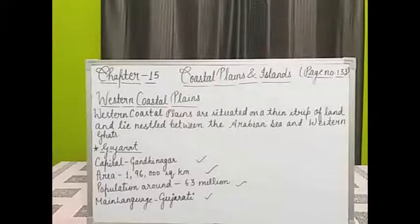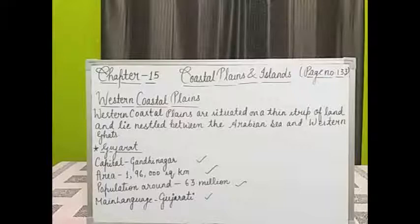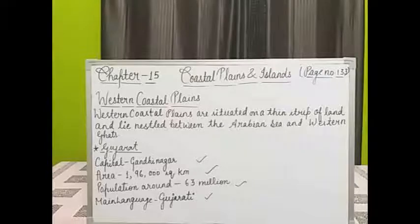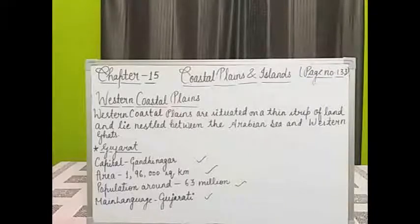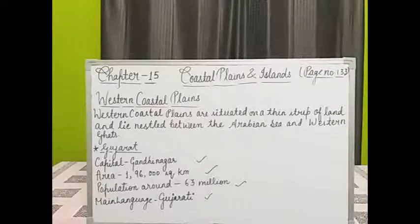Means, western coastal plains start from the state of Gujarat and continue till the state of Kerala. The western coastal plains have many rivers and backwaters which are unique to this region. Many rivers like Narmada, Tapi, Godavari, Tungabhadra, Krishna, etc. flow in the western region. Backwaters means stagnant water — a part of the river not reached by the current where the water is stagnant.